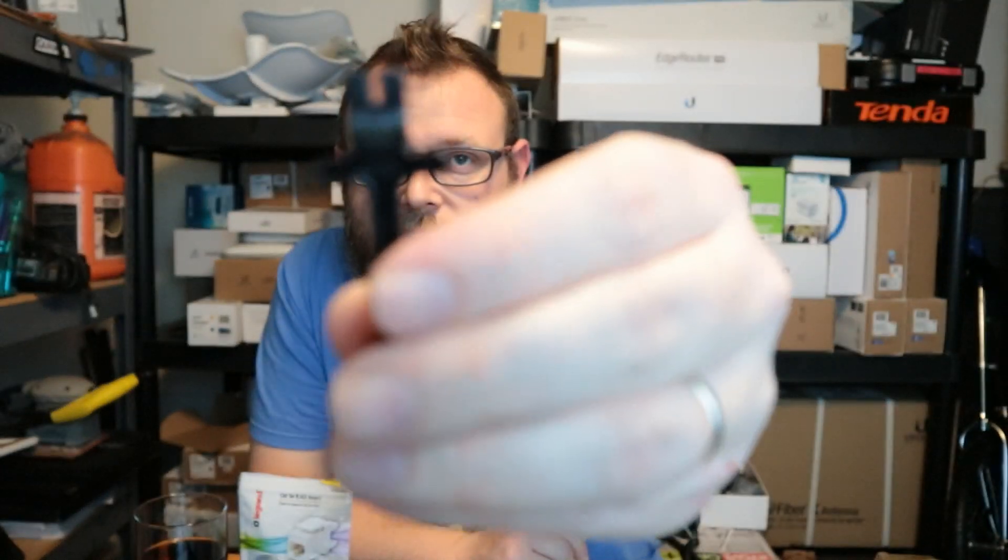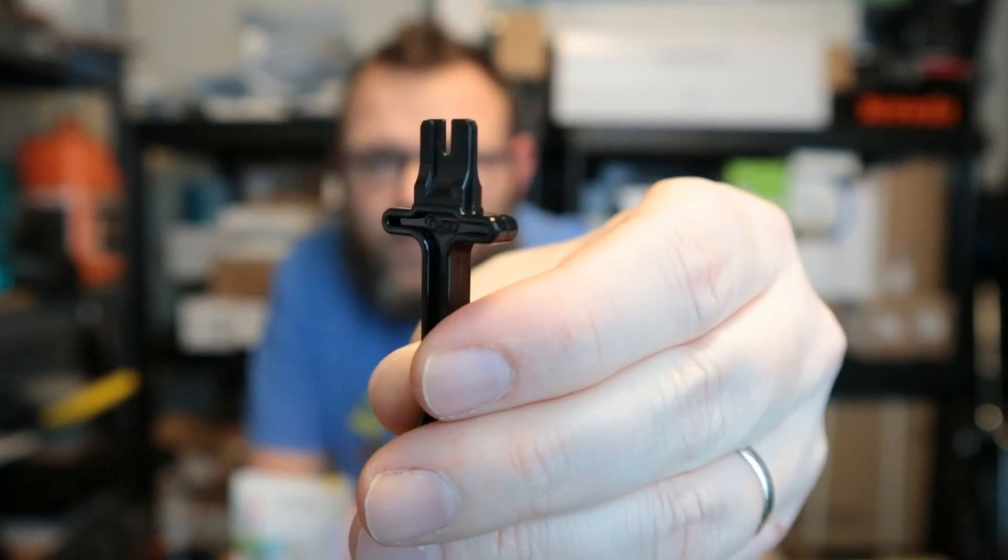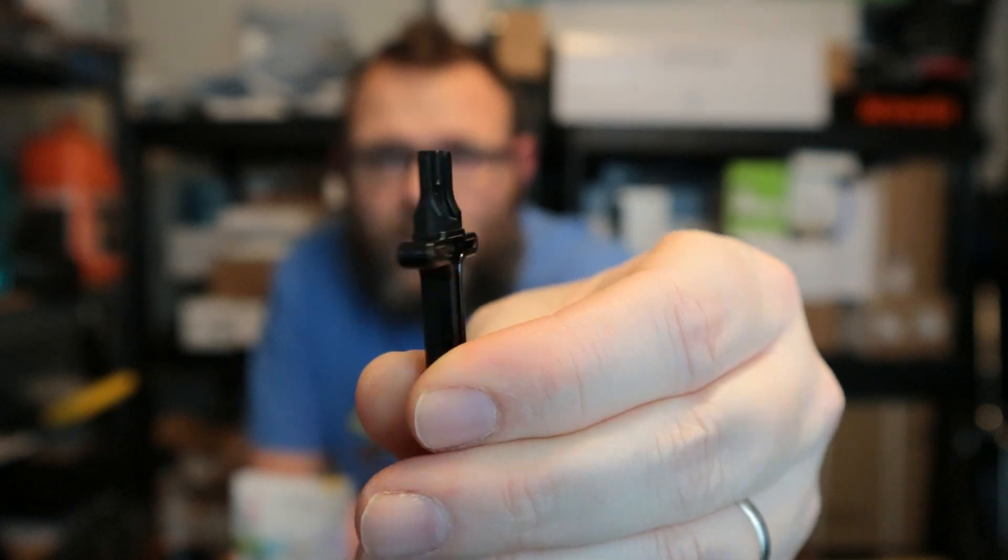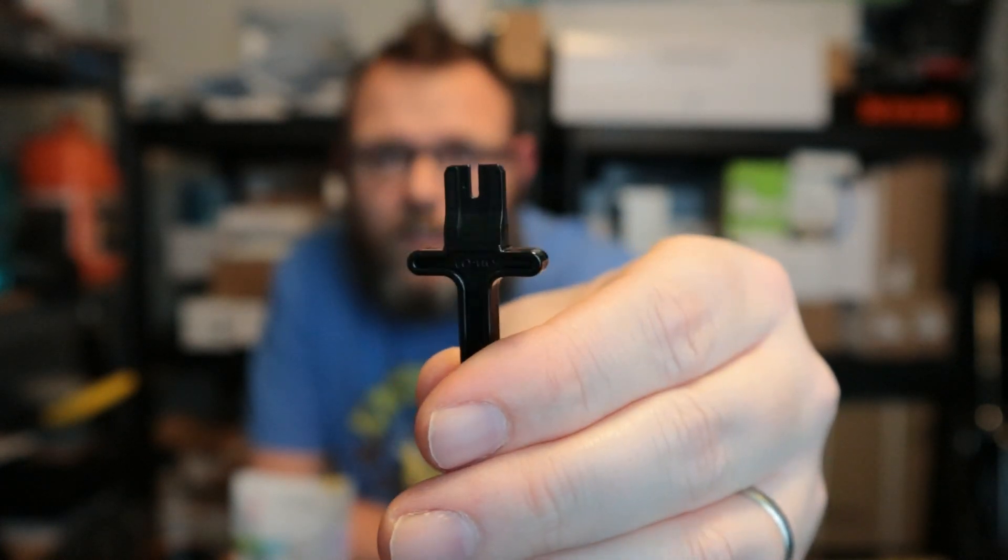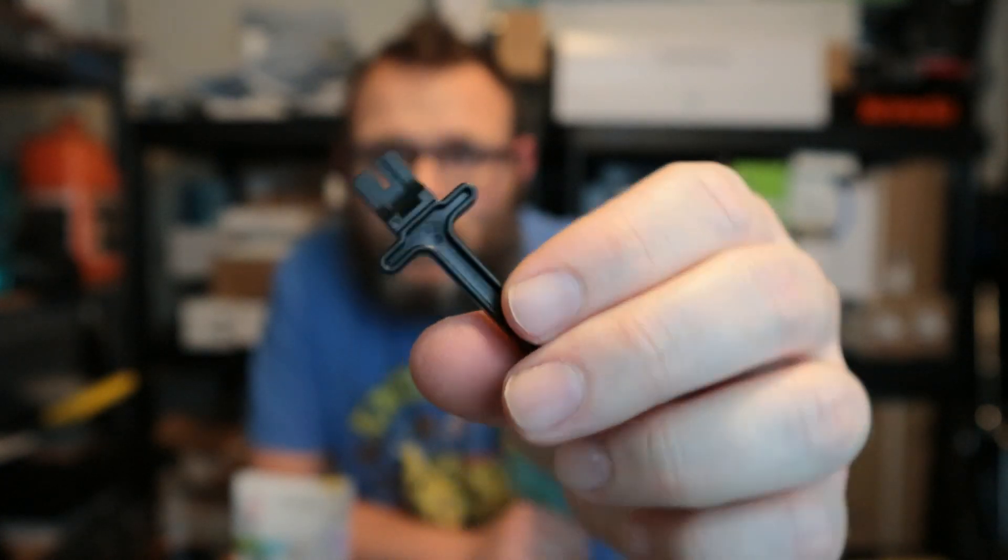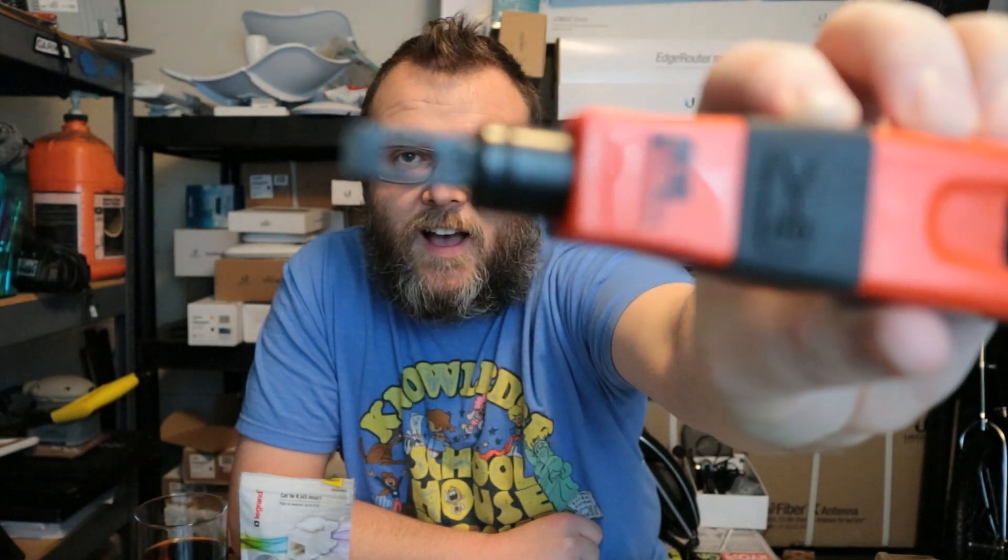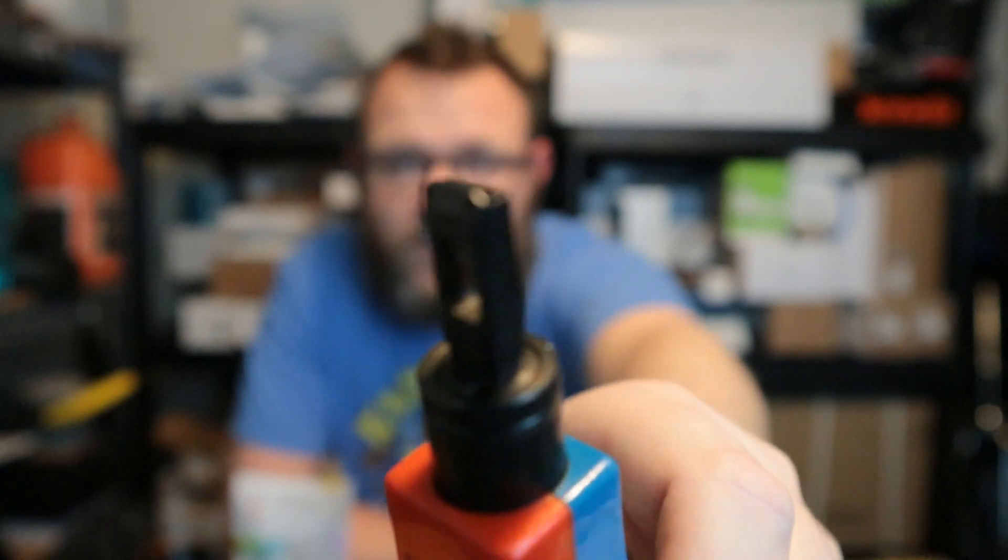Normally when you buy keystone jacks, you'll know what this is - this is the plastic tool that all the manufacturers send with their keystone jacks and we are not going to really use this. We're going to set it to the side. The other way that you can terminate these - now before all the experts blow up here, yes I know that in my punch down tool that is a 66 blade, that is not a 110 blade.